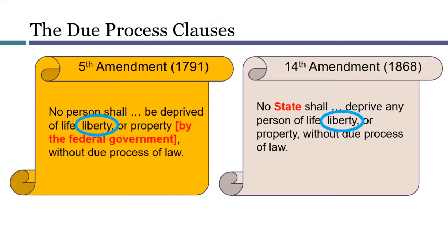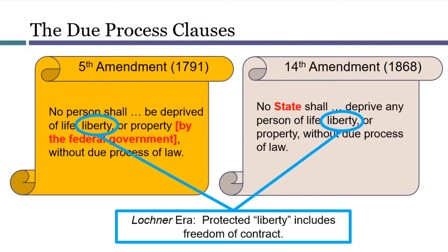Certainly no reasonable constitution would guarantee everyone the liberty to rob banks, to assault other people, or to drive the wrong way on a one-way street. Deciding which liberties are protected is one of the great ongoing debates of constitutional law. The defining feature of Lochner-era Due Process was its conviction that freedom of contract was one of the liberties protected by due process. If a person has freedom to make contracts without being limited by the government, this ought to include the freedom to enter into a contract where an employee works for more than 40 hours a week, or the freedom to enter into a contract where an employer pays less than minimum wage.